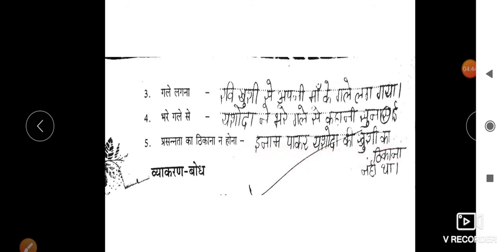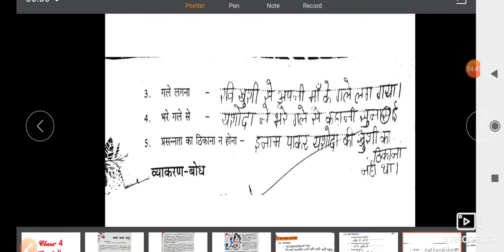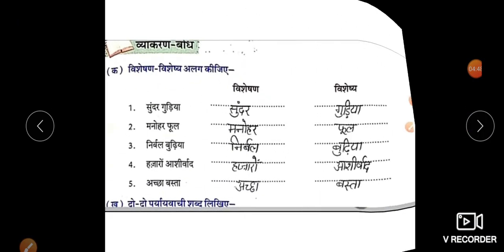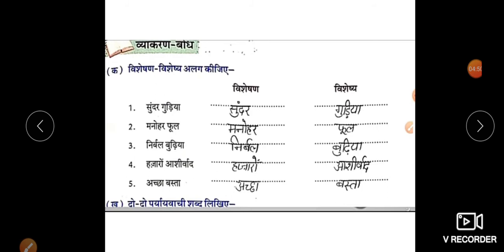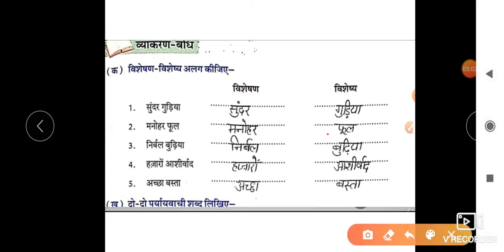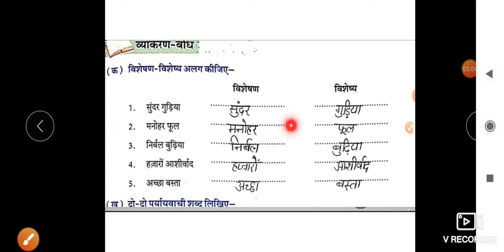'गले लगना' — रवि खुशी से अपनी माँ के गले लग गया। 'भरे गले से' — यशोदा ने भरे गले से कहानी सुनाई। 'प्रसन्नता का ठिकाना न होना' — इनाम पाकर यशोदा की खुशी का ठिकाना नहीं था। व्याकरण भाग: देखो बच्चों, इसमें है विशेषण और विशेष्य। आपको अलग-अलग करके लिखना है — विशेषण अलग कॉलम में, विशेष्य अलग कॉलम में। सुंदर गुड़िया — विशेषण: सुंदर, विशेष्य: गुड़िया। मनोहर फूल — विशेषण: मनोहर, विशेष्य: फूल। निर्मल गुड़िया — विशेषण: निर्मल, विशेष्य: गुड़िया। हजार आशीर्वाद — विशेषण: हजार, विशेष्य: आशीर्वाद।